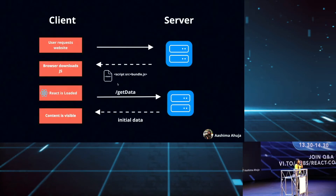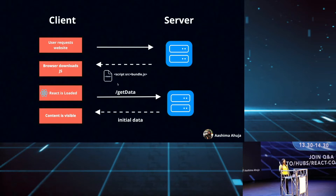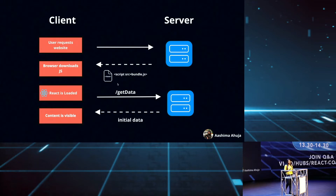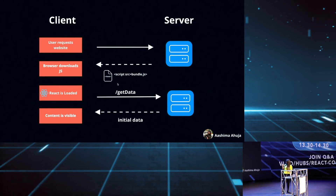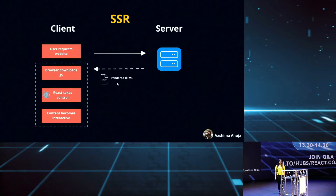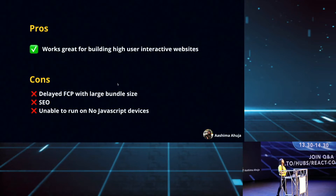Talking about client-side rendering: in a typical React application, when users request a website, the server sends an HTML with a div ID app and a script tag with bundle.js. The browser will then download the JS file, React will get loaded, and after that, the browser sends an initial request to fetch the initial data. Once the data is returned from the server, the initial content becomes visible. This approach works pretty well in building high user interactive websites, because we can render only the components which have changed, instead of re-rendering the entire application.